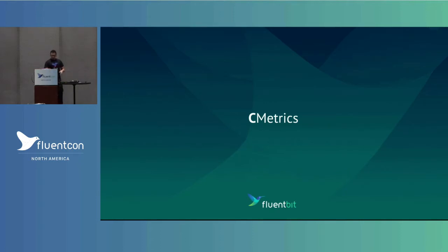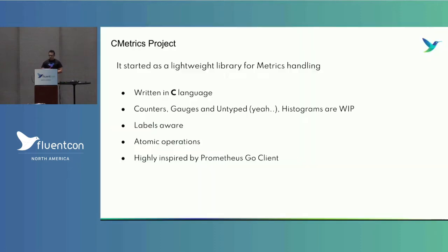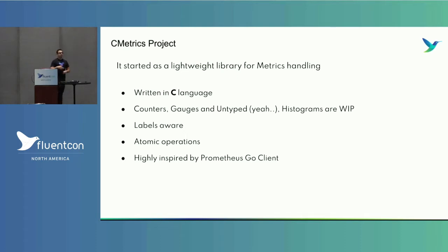We started a small project because if you're going to jump into something, you want to know how to take advantage of the ecosystem. We created a lightweight project called cmetrics, because we already had the engine for logs, routing, and buffers — but metrics was something new. We created cmetrics as a very lightweight library written in C that manages counters, gauges, untyped metrics, histograms, labels, and atomic operations. It was highly inspired by — essentially a copy-paste of — the Prometheus Go client. There are years of experience there; we don't need to reinvent the wheel.